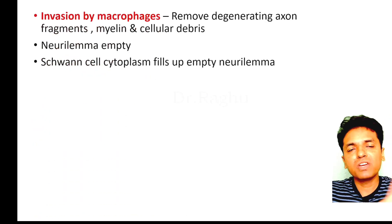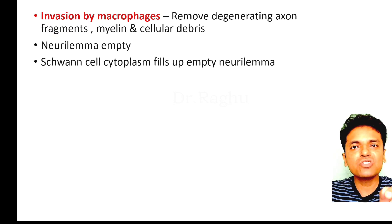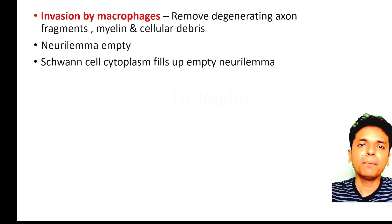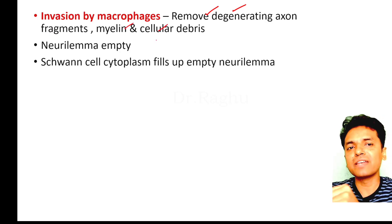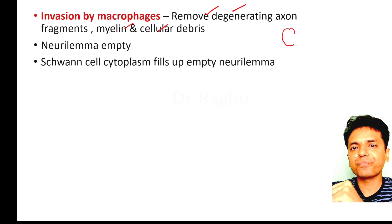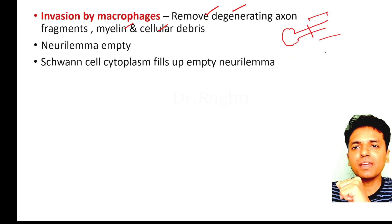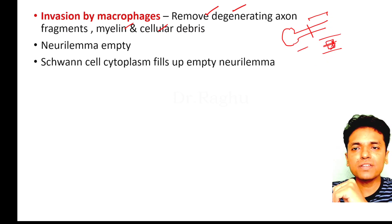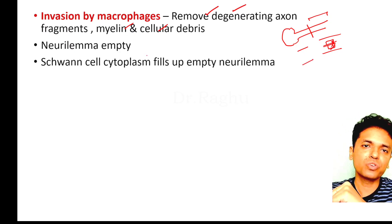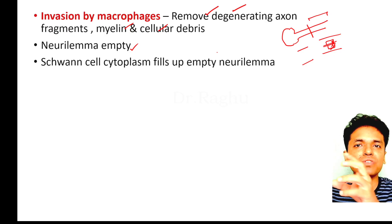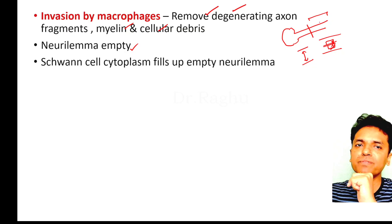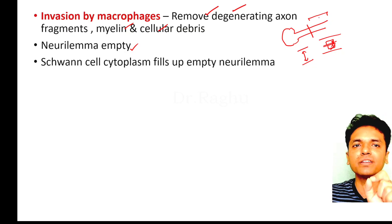The area where disintegration of both axis cylinder and myelin sheath has occurred is then invaded by macrophages. These macrophages help in removing the degenerating axon fragments, the degenerating myelin, and cellular debris. What remains in the distal portion is an empty tube called the neurilemmal tube. After this, the Schwann cell cytoplasm fills up this empty neurilemmal tube.